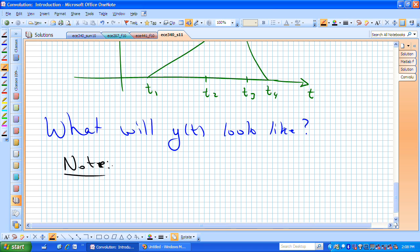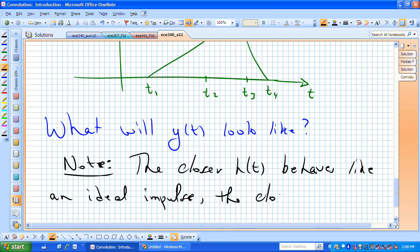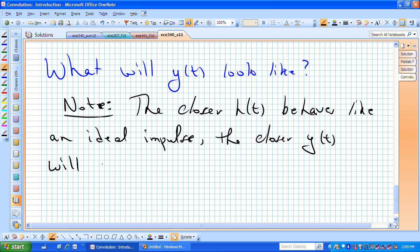Let me just make a comment, or a note, and this will make a little more sense after you've played with this a while, but the closer that h of t, the impulse response of our system, the closer that behaves like an ideal impulse, and we know what that looks like, that's just this infinitely tall, has an area underneath it of one, occurrence at the origin, the closer our system's impulse response looks like or behaves like an ideal impulse, the closer our output response y of t, the closer that will look like x of t. That's just something to keep in mind as we're thinking about what's going on.